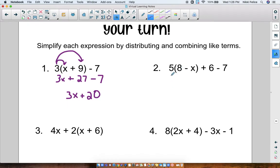Okay, number 2, we have 5 times 8 minus x plus 6 minus 7. So let's start with 5 times 8, which is 40. And then 5 times x, which is 5x. And then I'm going to bring down plus 6 and minus 7. And I can combine all those like terms together. So I see 40 plus 6 would be 46. And then 46 minus 7 would be 39. So this would be 39 minus 5x. And that would be my simplified answer.